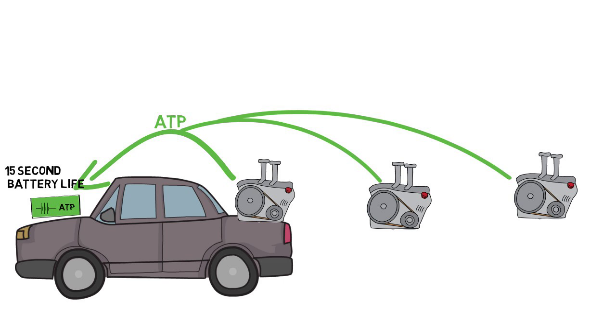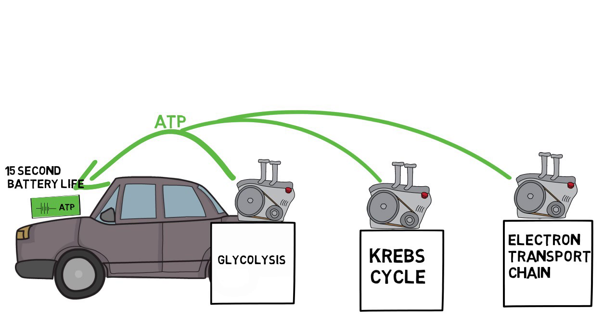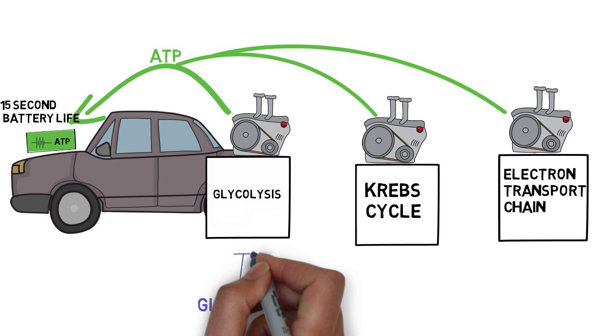This is why the three ATP generation systems of the body are so important to keep the ATP battery topped off. The first generator runs on that glucose that is stored and available in the muscles. Through something called glycolysis, the muscle is able to create four ATP molecules from a molecule of glucose.